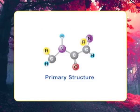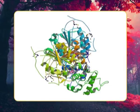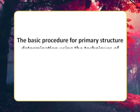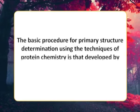Procedures for primary structure determination have since been so refined and automated that proteins of similar size can be sequenced by an experienced technician in a few days using only a few micrograms of protein. Despite these technical advances, the basic procedure for primary structure determination using the techniques of protein chemistry is that developed by Sanger.